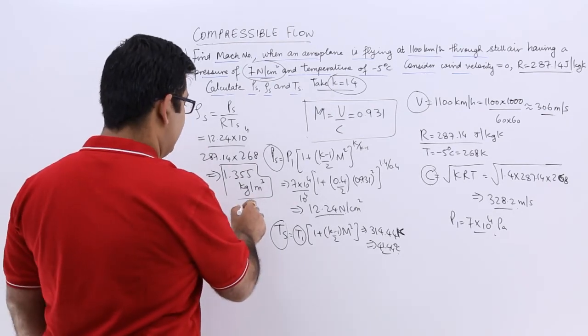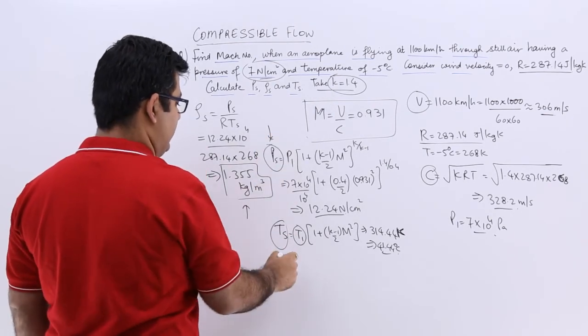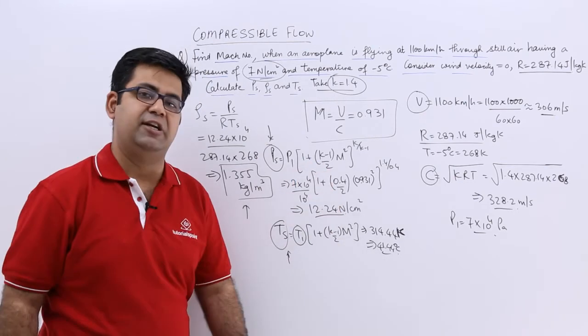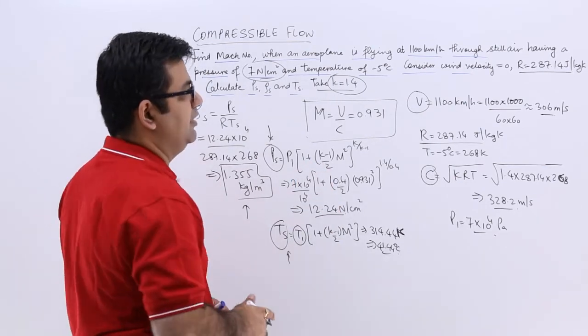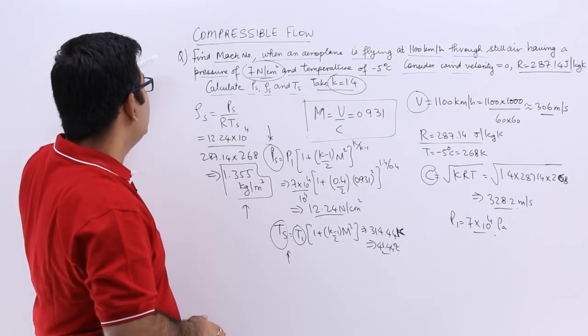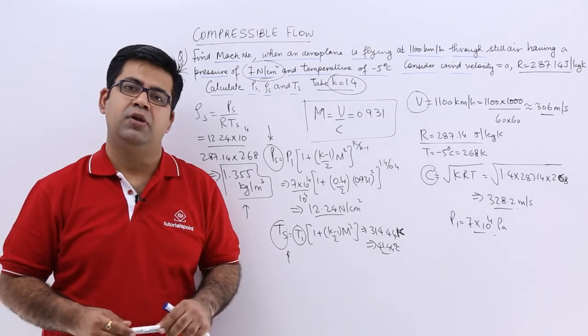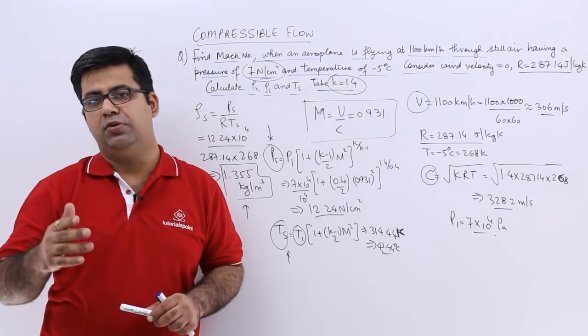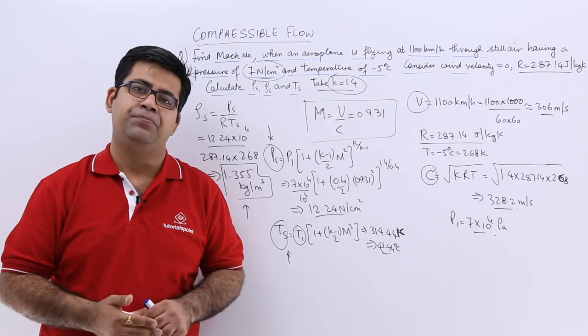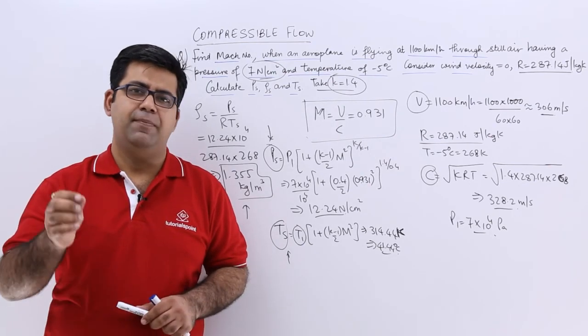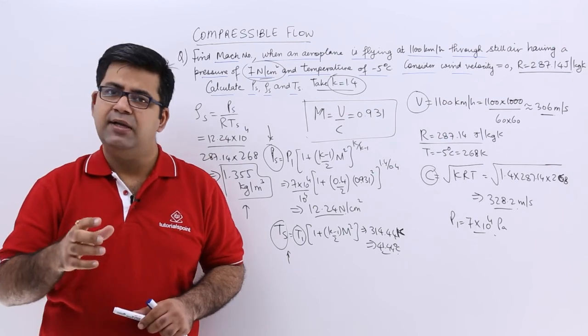So this is the stagnation density, this is the stagnation pressure and this is the stagnation temperature. So this is as simple as it can get. So I hope you got an idea of what do we have in store for compressible flow in gate. So now let us move on to the next topic and start talking about the impact of jets and jet propulsion.